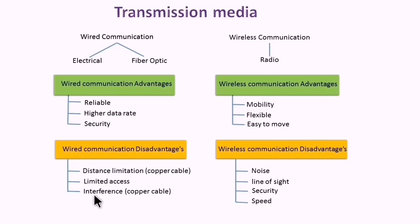Copper with electric signal is affected by interference. Again, this is not applied to fiber optic, which we will cover in detail later.